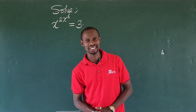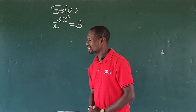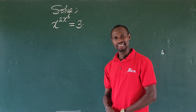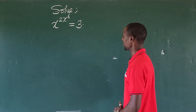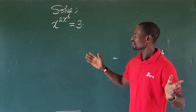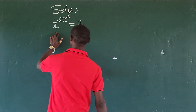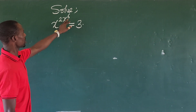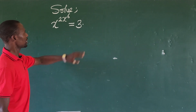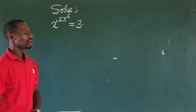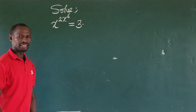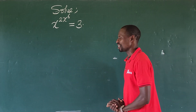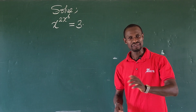Hello everyone, welcome to today's class. Today we have the Harvard IMT Math Tournament question. The question says: x to the power of two times x to the power of six equals three. What is the value of x that will satisfy this?